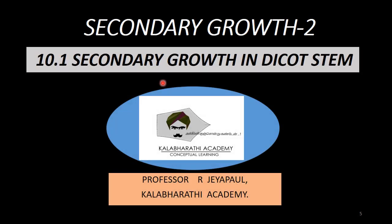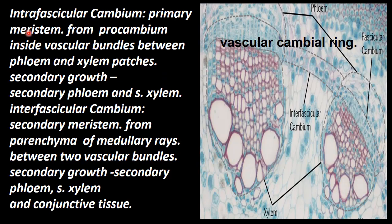Welcome to Kalabharithi Academy. In secondary growth, there is an increase in girth in dicots and gymnosperm forms. In secondary growth of the dicot stem, there is also an intrafascicular cambium. Cambium gives rise to vascular structures of the plant — that is xylem and phloem.